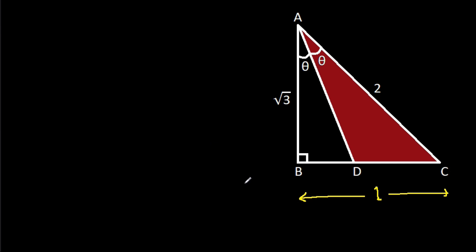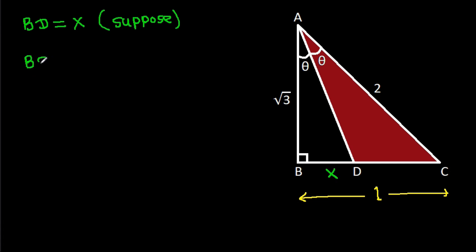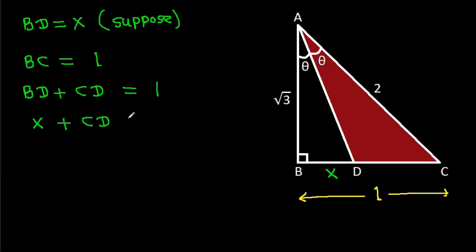Now suppose BD = X. Then since BC = BD + CD = 1, and BD = X, we get CD = 1 - X.